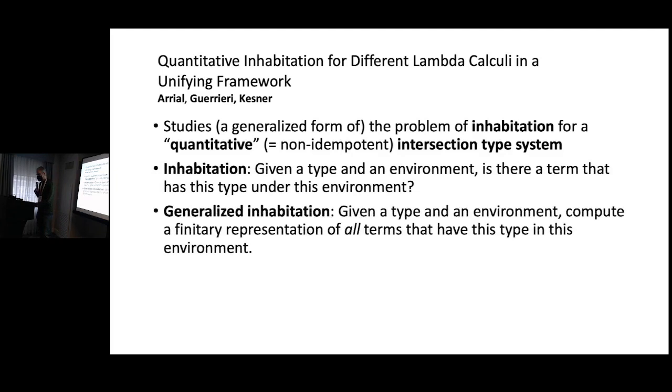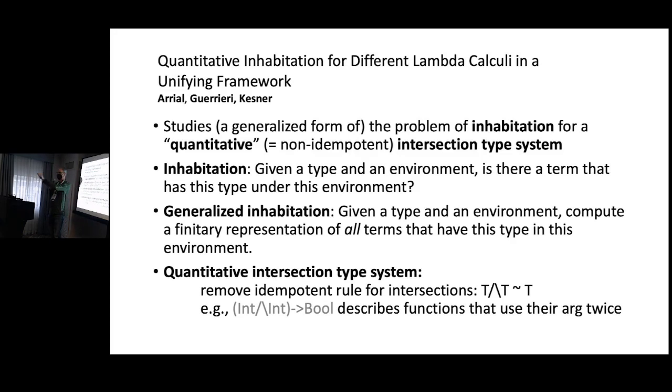T intersect T is a type that has two uses of T, and T by itself just has one use of T. So, by removing this idempotence rule and sort of counting the number of intersections, you give yourself a quantitative interpretation of the language which allows you, where types place a bound on the possible runtime of typable terms. And in this setting, they study the problem of when is a type inhabited. Concretely, given a type environment at a type, is there a term of that type in that type environment? Actually, they study this problem in a generalized form, not just is there a term, not just what is a term, but what is a finitary characterization of all such terms? That's the problem they solve in this paper. Hope to see you at the session.